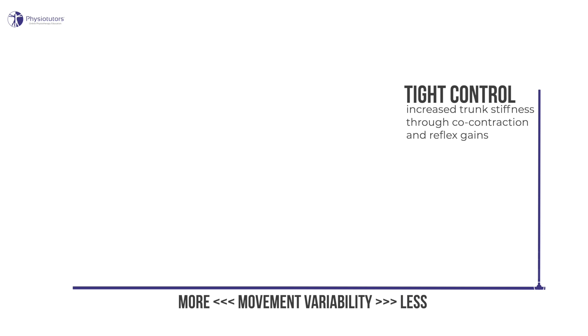Such a strategy would also be expected to reduce variation in movement. Tight control can be subtle, with slightly higher activation within a region of a muscle, up to complete avoidance of a task or function on the other end. While probably beneficial in the short term as a protective mechanism, it comes at the cost of increased spinal loading, impaired water reuptake in the intervertebral discs, decreased dampening to counteract perturbations, and muscle fatigue.